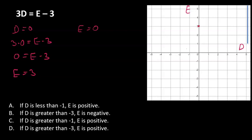Second point is e equals 0. In this case, we have 3d equals 0 minus 3. We divide by 3 and get d equals minus 1. So we have e equals 0 and d equals minus 1. Now we can take this line and plot the graph. It goes right through here.